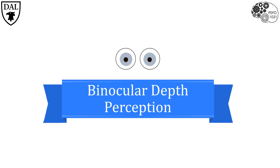The ability to discriminate between what's near and what's far is known as depth perception. Depth perception relies on two types of cues: monocular and binocular. Monocular cues allow us to judge depth with the use of one eye, but binocular cues require the use of both eyes. This topic will focus on binocular depth cues.